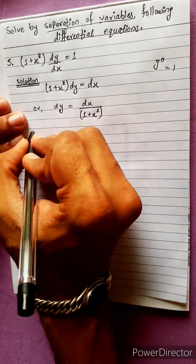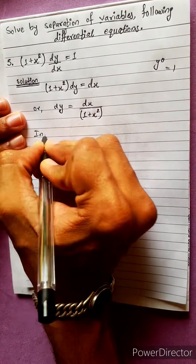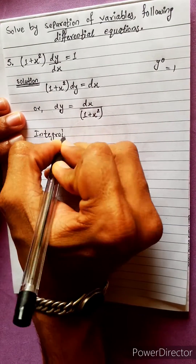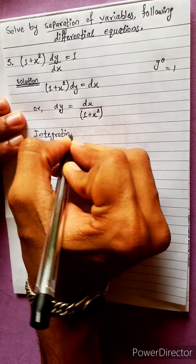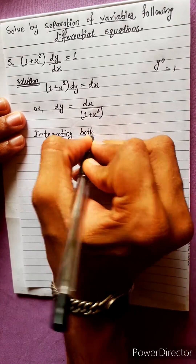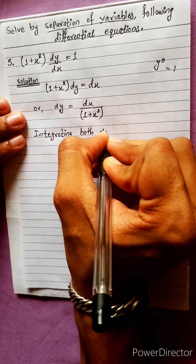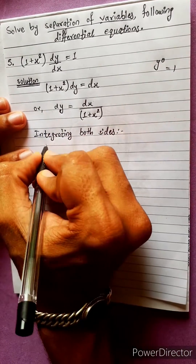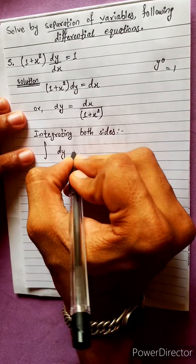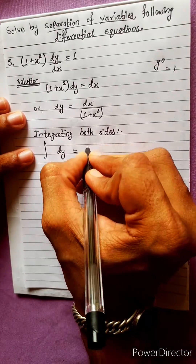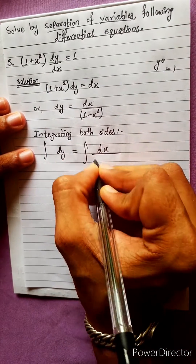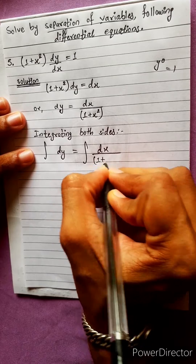Now we integrate both sides. Integrating: the integration of dy equals the integration of dx divided by (1 + x²).